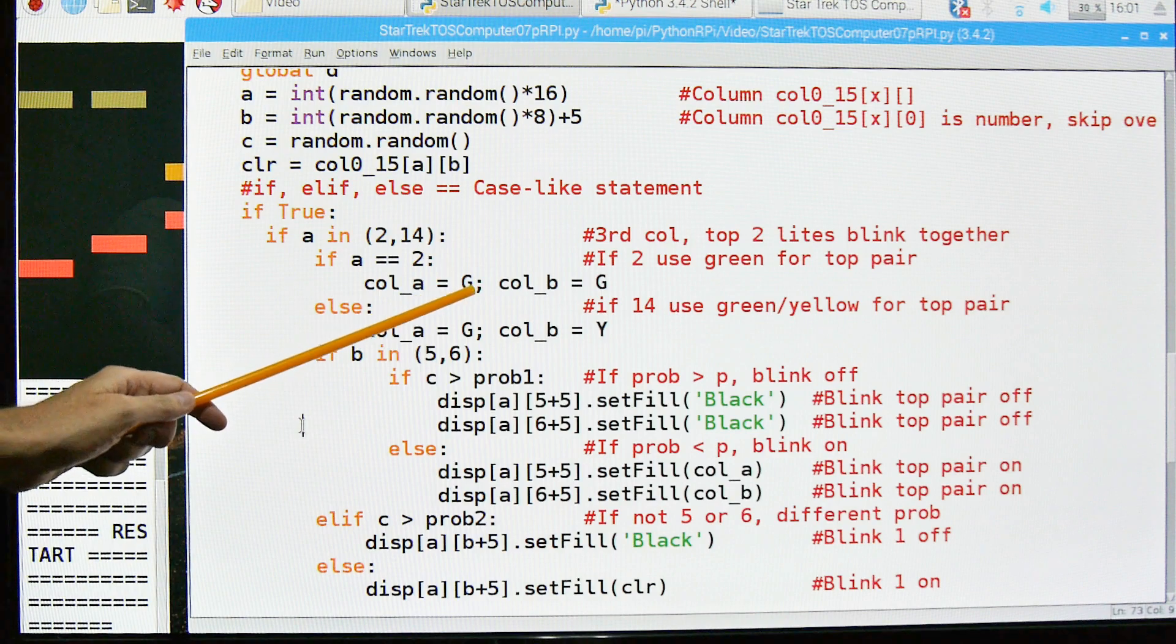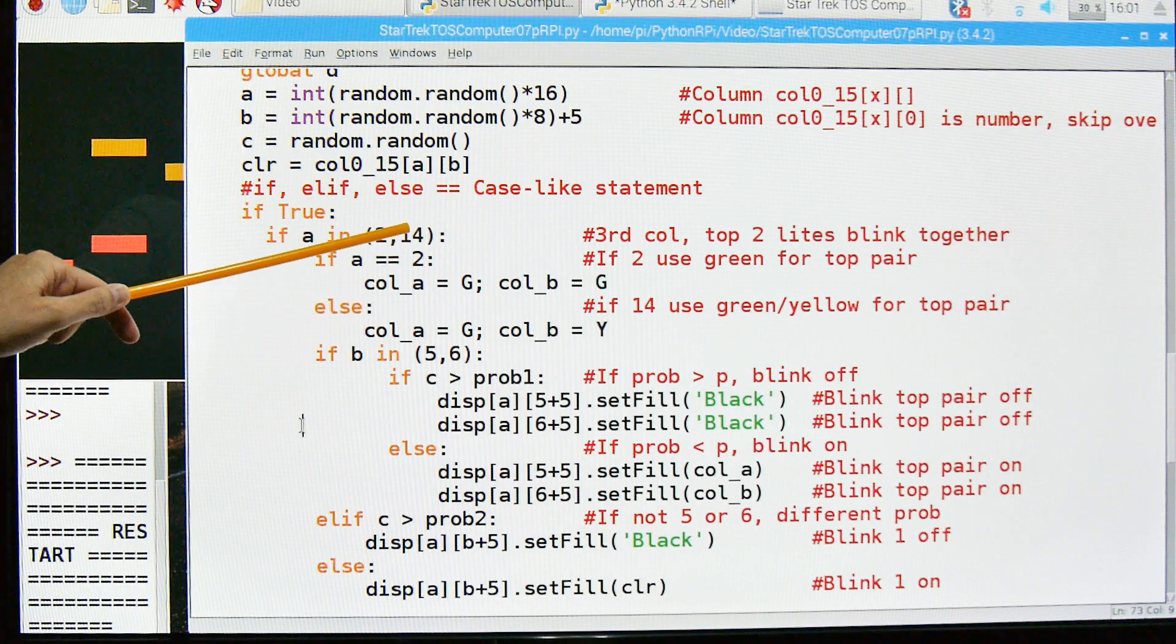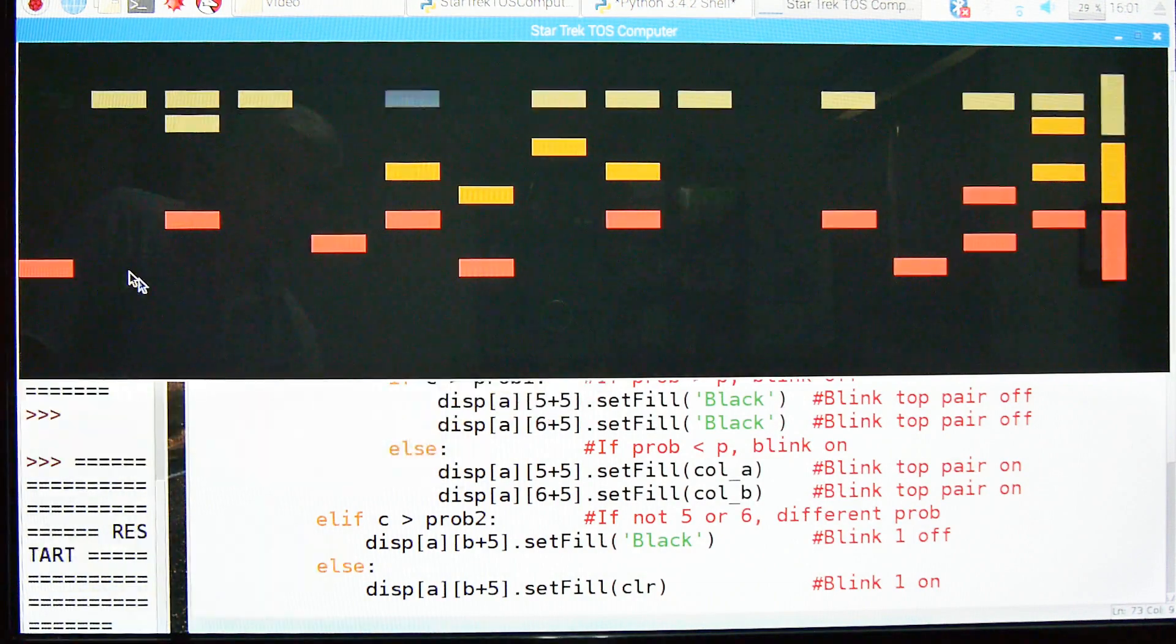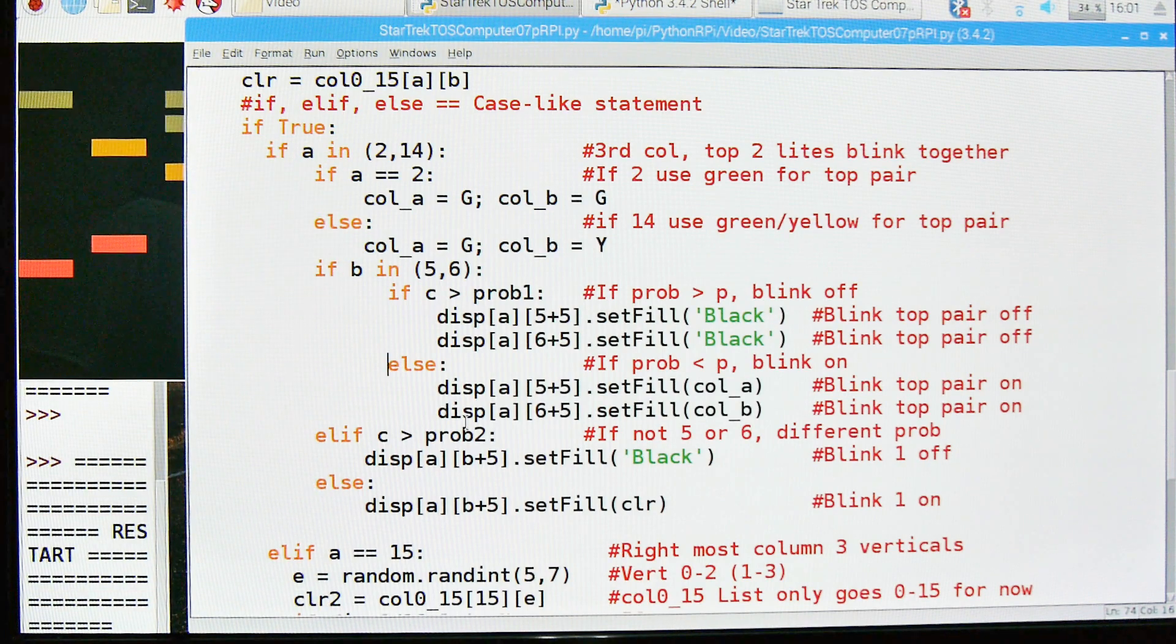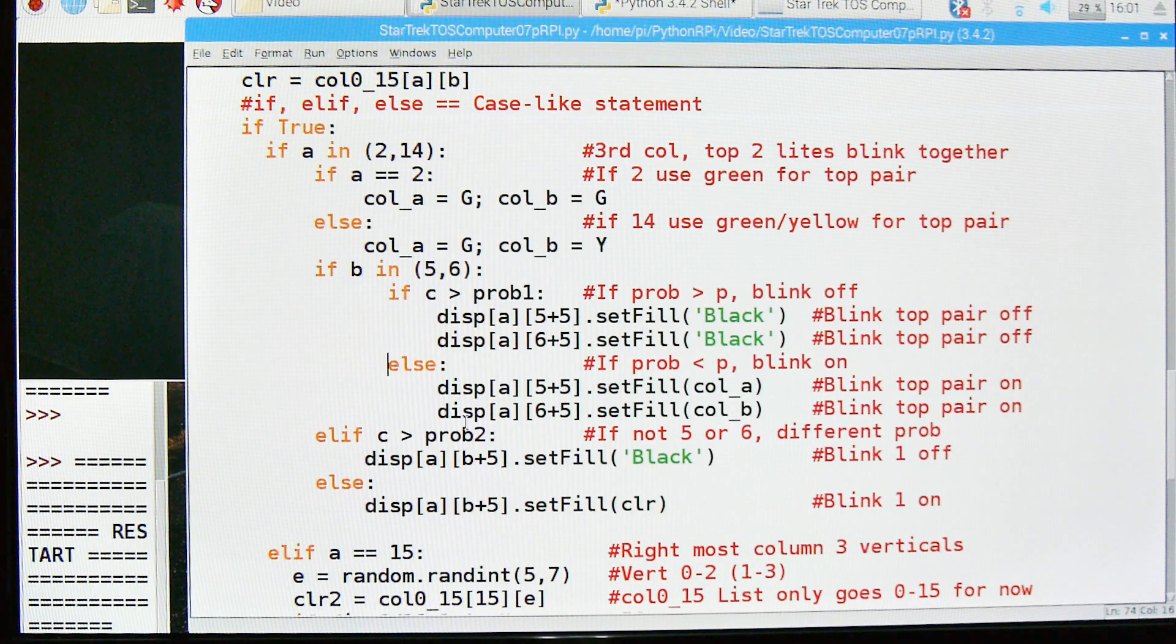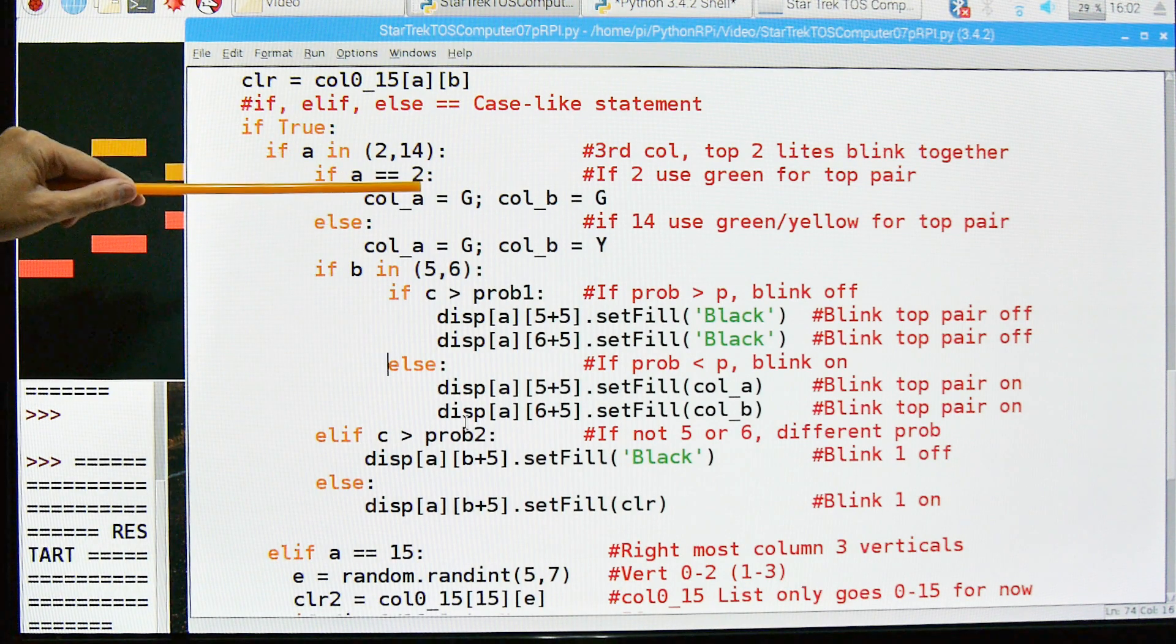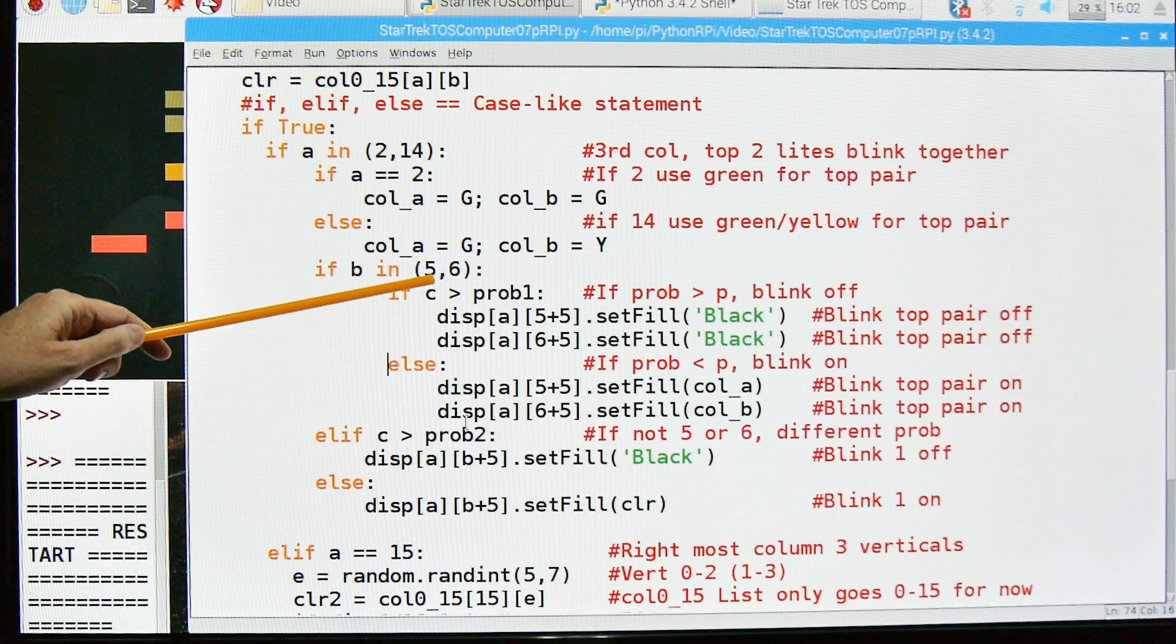So if we're looking for A either column 2 or column 14. And that's these weird ones where they blink together like you can see this one right here. The two bars blink together. I have to single those out. So I've got this case statement and this case, this particular case is this right here. And those are 2 and 14 in the vernacular of these columns. If A is either column 2 or 14. If it's 2, then what we're going to do is we're going to set the color, the first color for G and the second color for G. Otherwise, if it's not 2, then it's 14 and the colors are G and Y, green and yellow.